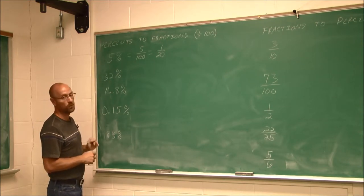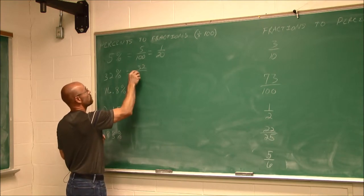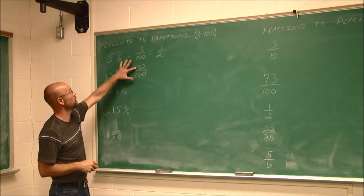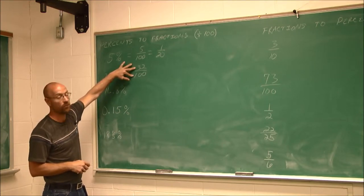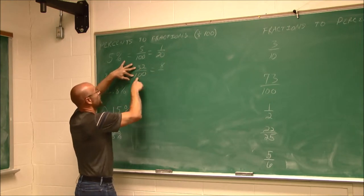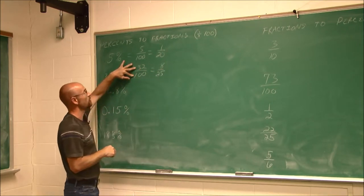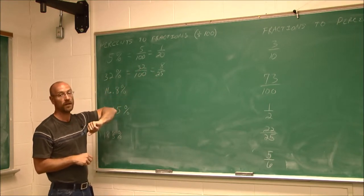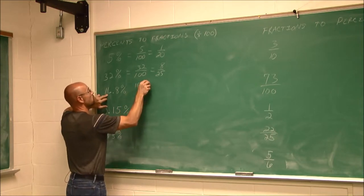For 32%, percent tells us to divide by 100, so we write 32 over 100 and reduce. Both 32 and 100 are divisible by 4. Dividing gives us 8 over 25. 8/25 doesn't reduce any further, so that's our fraction. The process is: divide by 100 and reduce.